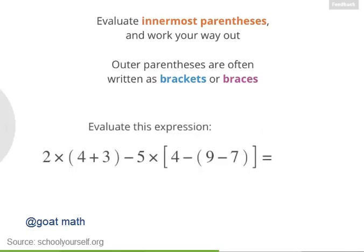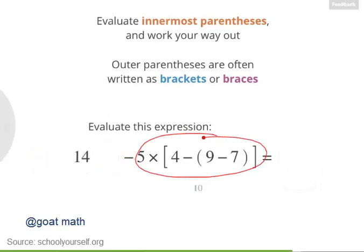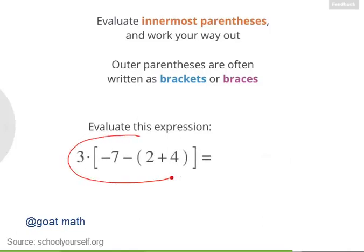Try evaluating this expression, which has a pair of brackets. This first part equals 14, and this second part equals 10. 14 minus 10 is 4, which is the correct answer. Try evaluating this last expression — and remember, this dot over here is another way to write the multiplication symbol.